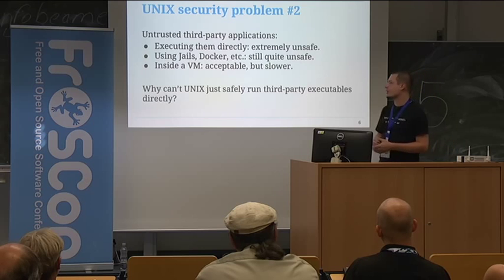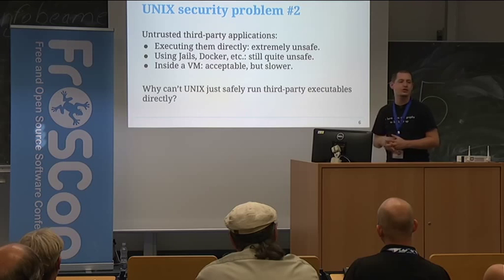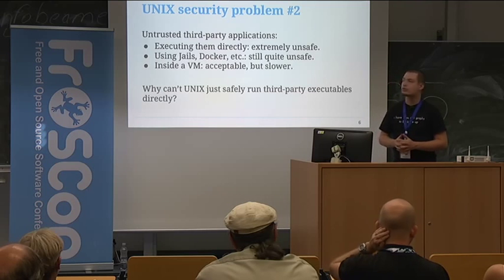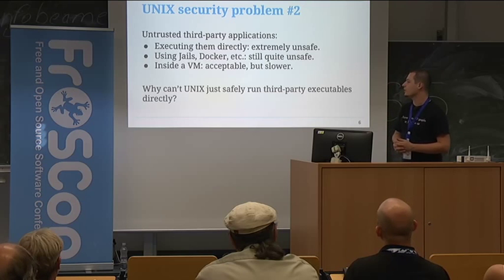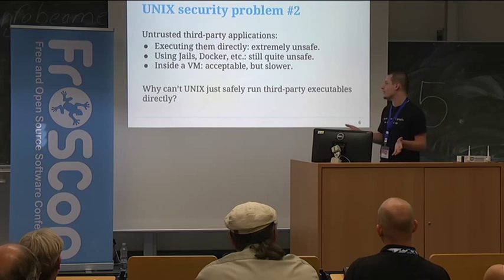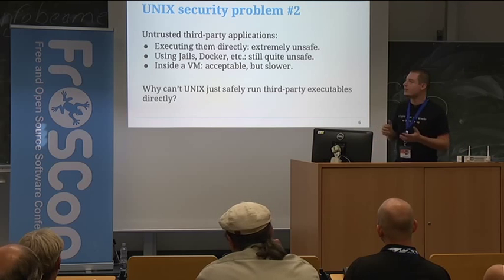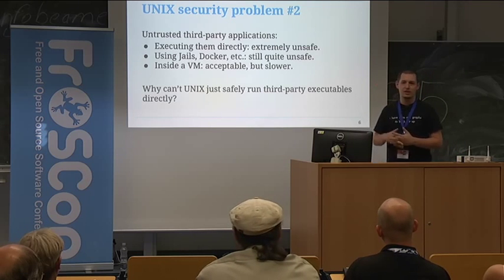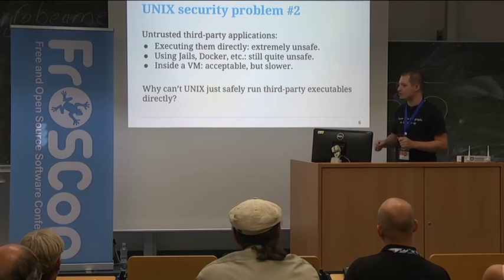As a last resort you can run your process in a virtual machine — using Xen or KVM to run a separate instance. But the problem is that it increases maintenance overhead and also reduces performance quite significantly. So the question I ask myself is: why can't Unix just safely run third-party executables directly? It should be safe by default — it should only access the things you grant to the process, and shouldn't be able to perform arbitrary tasks.